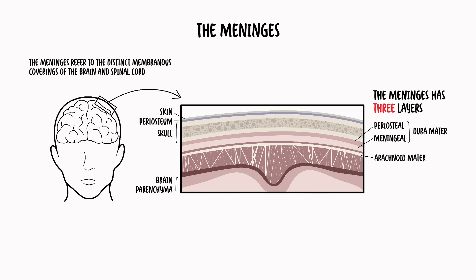The deepest layer of the meninges is called the pia mater. Compared to the other layers, the pia mater is thin and friable.